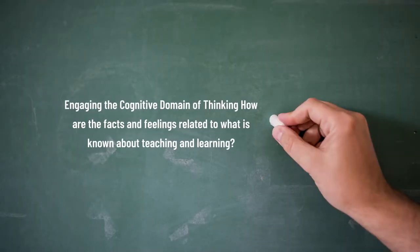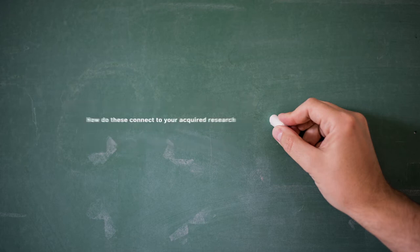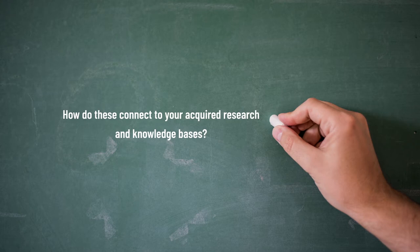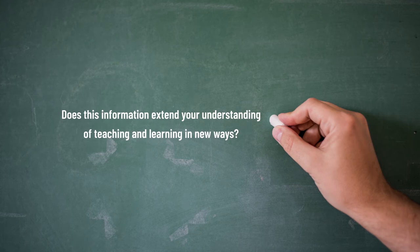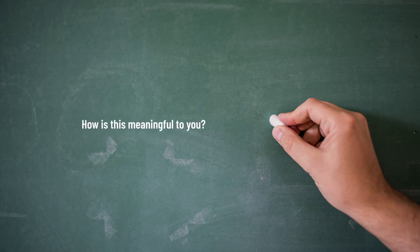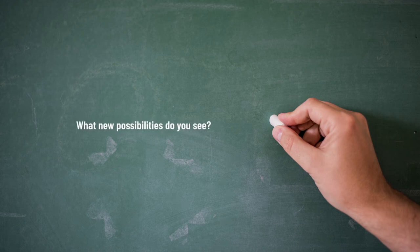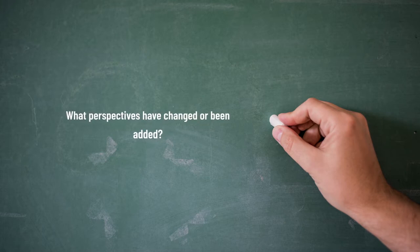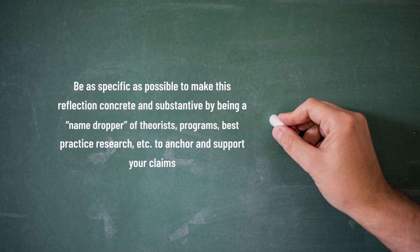Then comes Relevance. In the Relevance step you engage the cognitive domain of thinking. How were the factors and feelings related to each other? What is known to you about your teaching and learning? How do these connect to your acquired research and knowledge base? Does this information extend your understanding of teaching and learning in new ways? You also analyze how this reflection is meaningful to you — what impact it has had, what new possibilities you see, and what perspectives have changed or been added. Be as specific as possible to make reflection concrete and substantive by referencing theorists, programs, and best-practice researchers to anchor and support your claims.